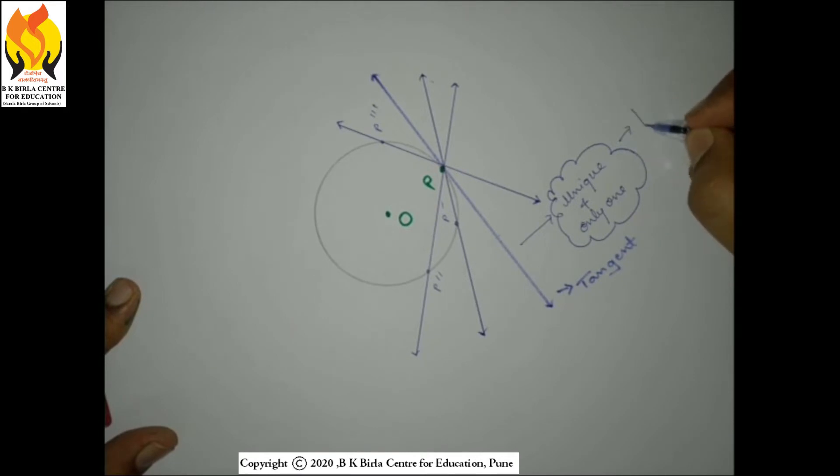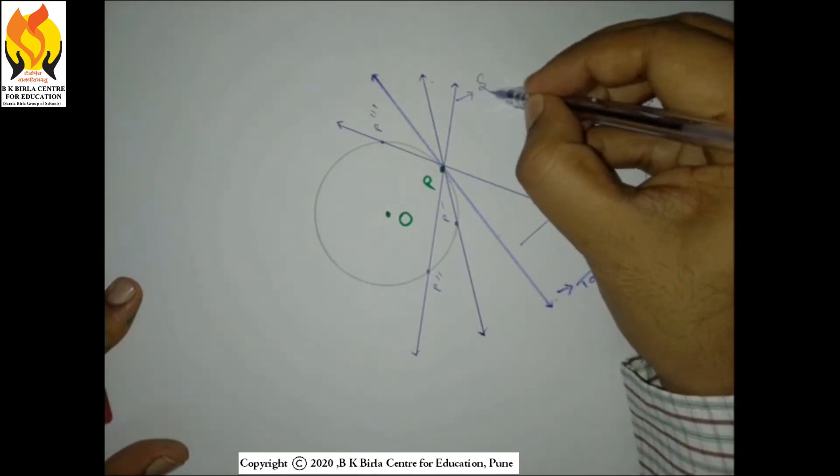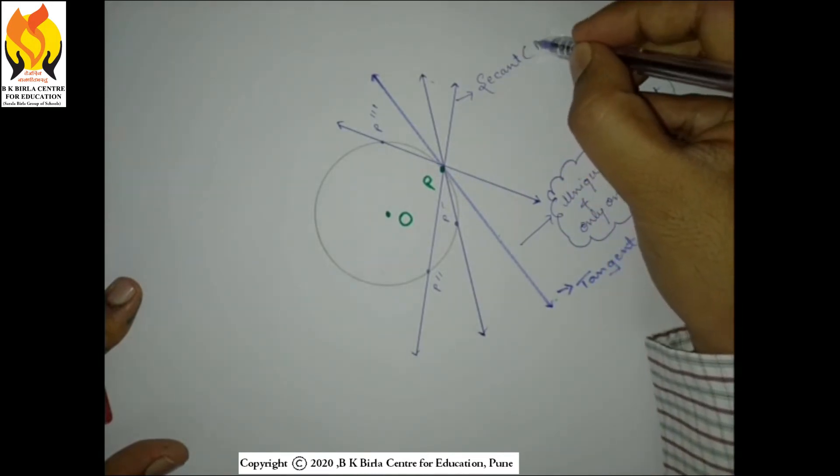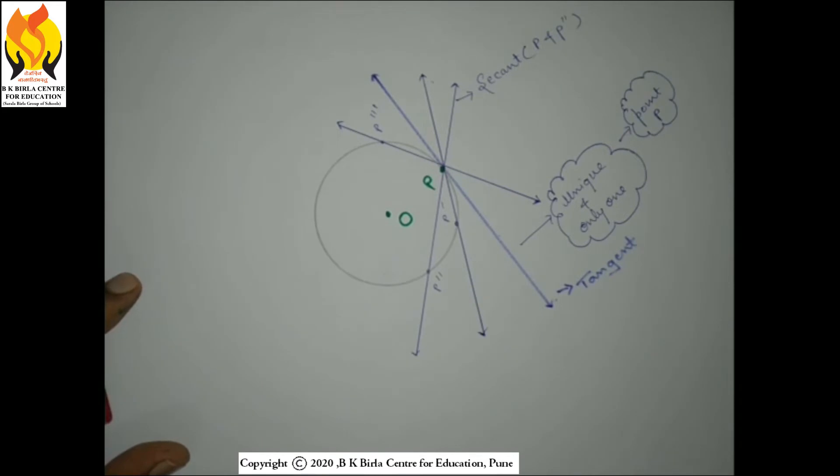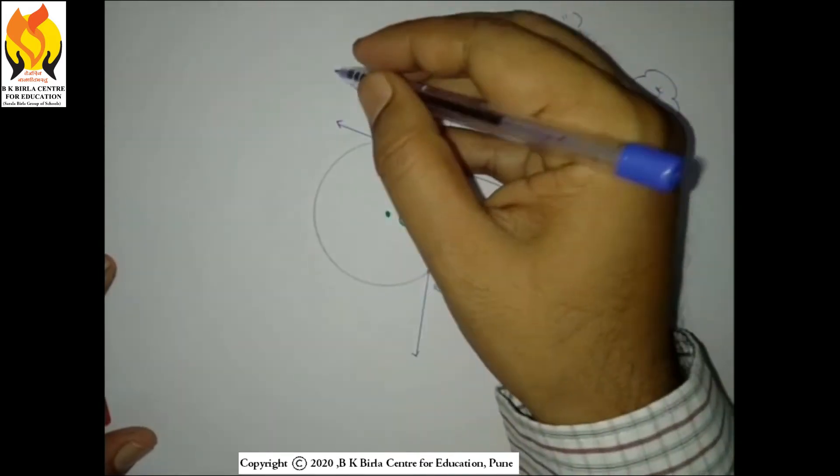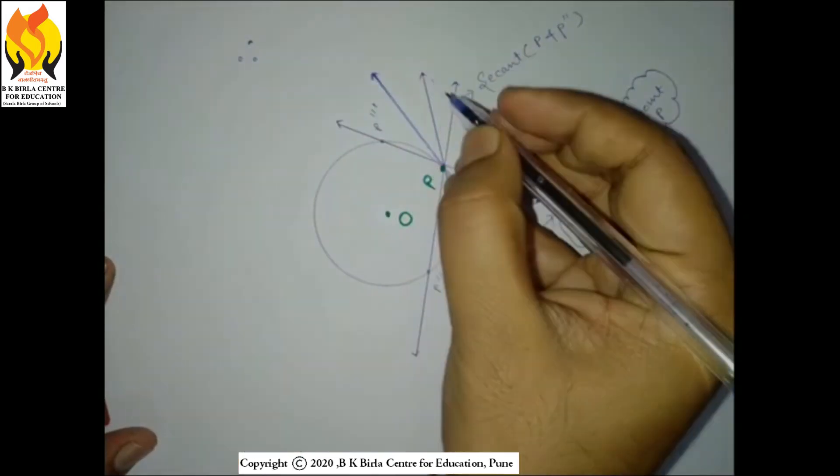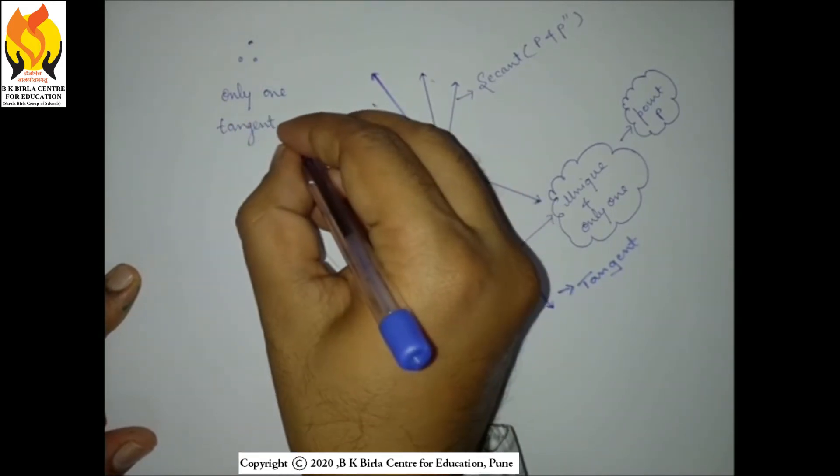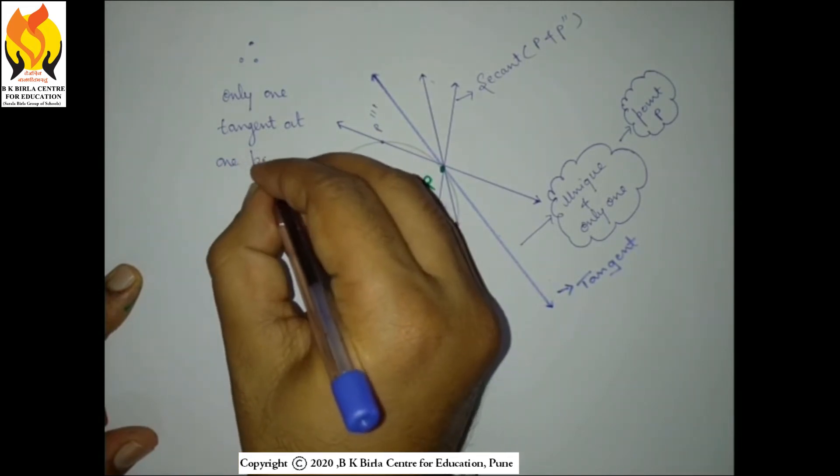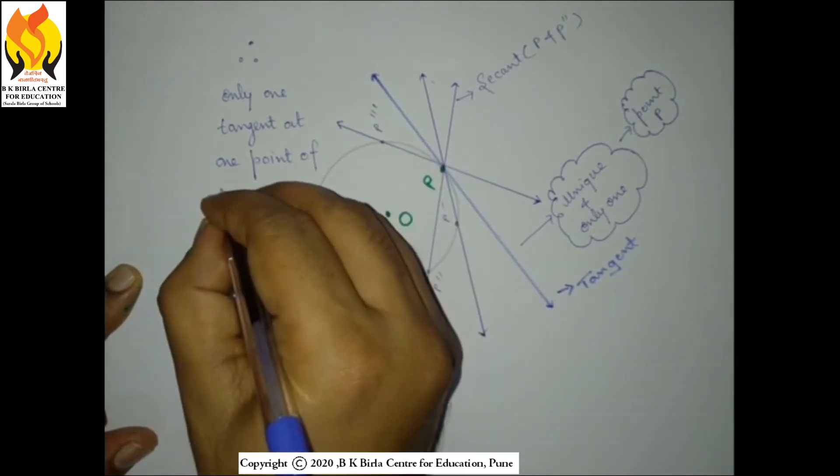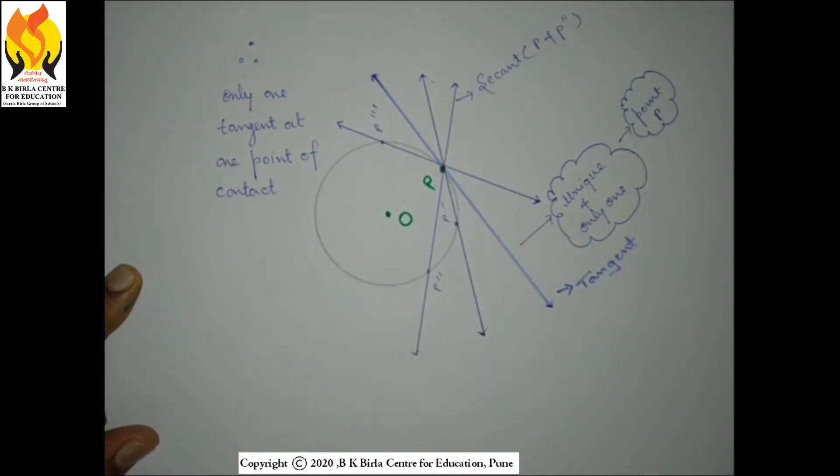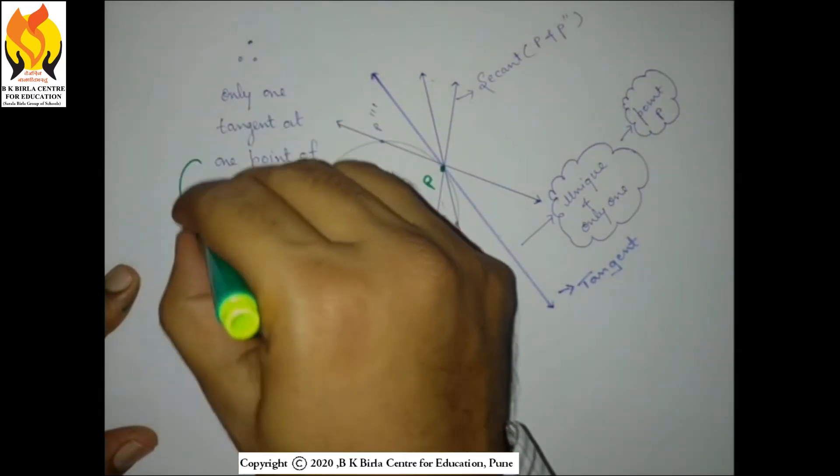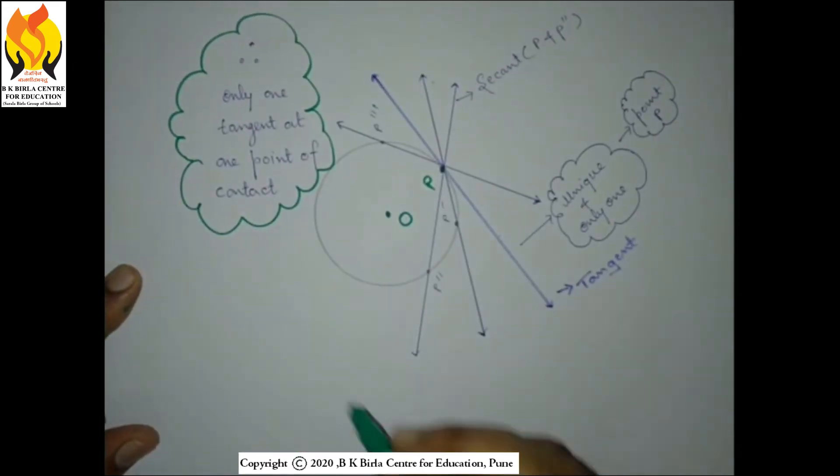This shows that at a point of contact, the tangent is unique and it is only one. This becomes the first property of the circle. Always remember we are talking about a single point of contact. A circle may have infinite tangents at different points of contact. So here we can see that these are the secants and this secant has two points of intersection as P and P double dash. Therefore, the learning from this activity is that single point of contact implies a unique tangent, that is one and only one tangent. This becomes our one property of tangents, which is a very very important property.